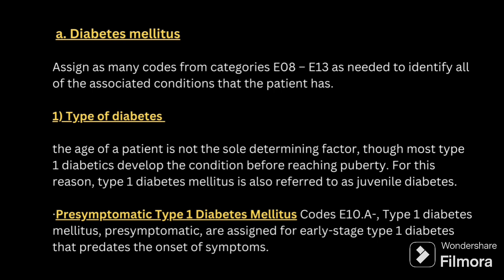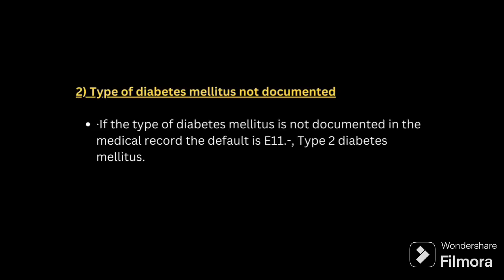In this, type 1 and type 2 diabetes are there. Type 1 means less than 14 years, that is before puberty. Type 1 is also called juvenile diabetes. And if there is a pre-symptomatic type 1 diabetes, you have to code E10.A — that is pre-symptomatic type 1 diabetes. Type 2 diabetes is coded as E11. In your question, if the type of diabetes is not documented, either type 1 or type 2, by default you have to assign it as type 2 diabetes.